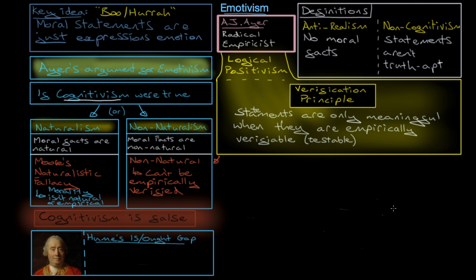Ayer also takes inspiration from Hume's is-ought gap. Which is essentially the claim that you can't derive an ought statement, a moral statement, from a fact statement. And Hume says that rationality facts don't determine morality. Instead, the thing that does is feelings, intentions.